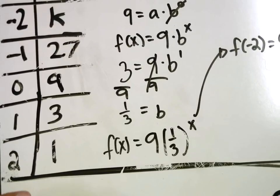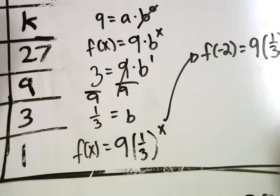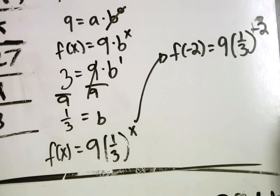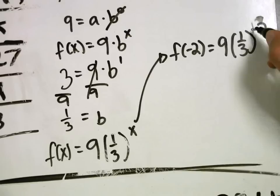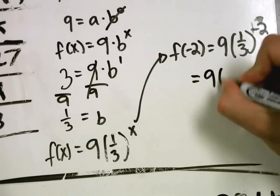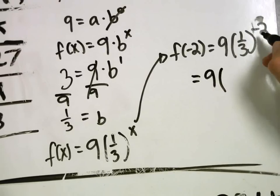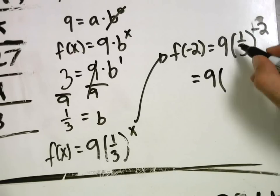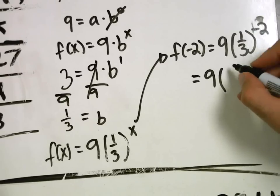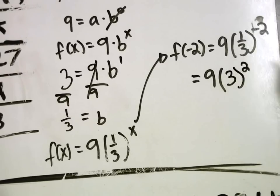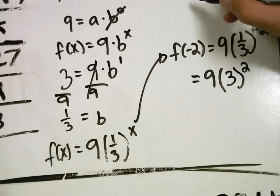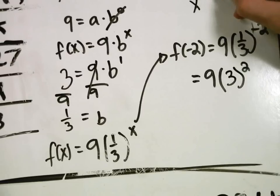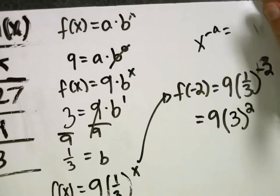This is the same thing as saying 9 times, well, what is one-third to the negative 2? Well, one-third to a negative power is like saying 3 to a positive power. x to the negative a equals 1 over x to the a. So, that's a rule. That's our exponent rule.